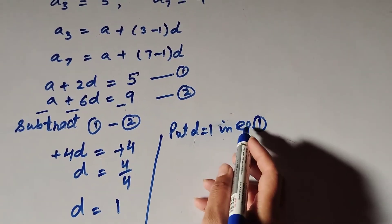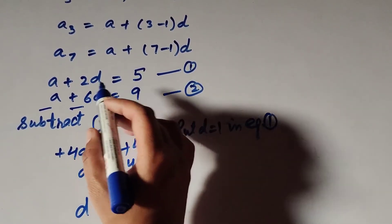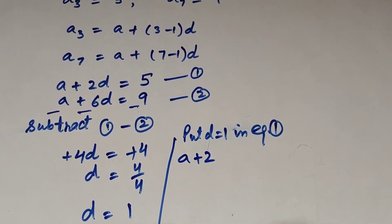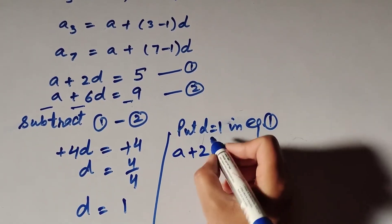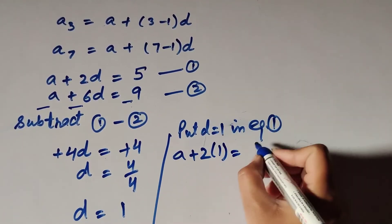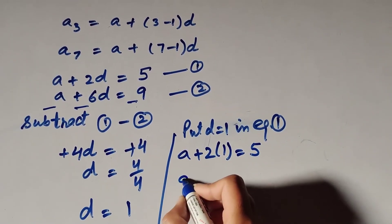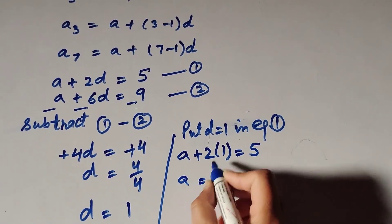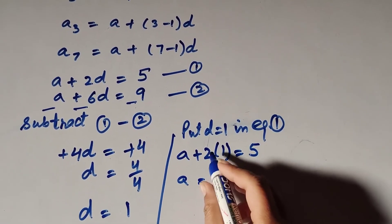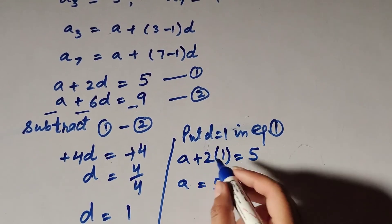Equation number 1 is a plus 2d equals 5. Substituting d equals 1 gives a plus 2 times 1 equals 5, so a plus 2 equals 5.